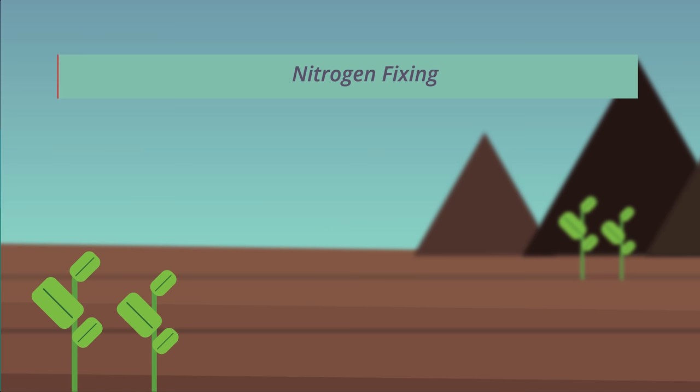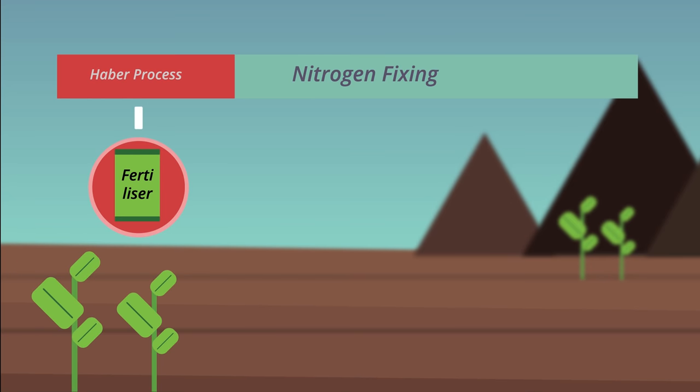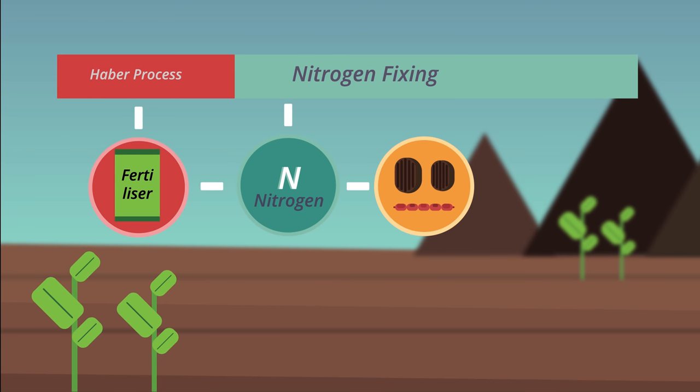These are the natural ways through which nitrogen fixing occurs. The Haber process, which is how fertilisers are made, makes up approximately 30% of the nitrogen fixing. Because nitrogen is essential for making proteins, proteins are essential for cell production.